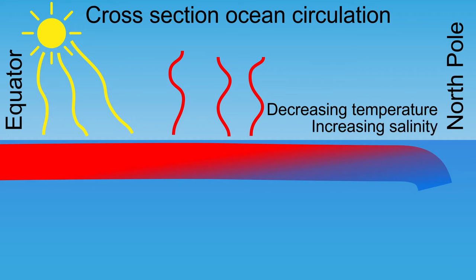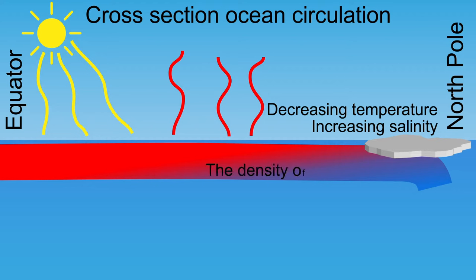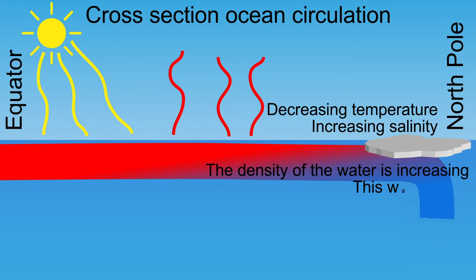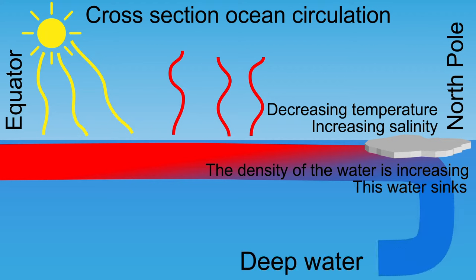Also, a lot of water evaporates, but the salt remains behind. When seawater freezes and forms sea ice, the salt also remains in the seawater. In short, the density of the water is therefore increasing.